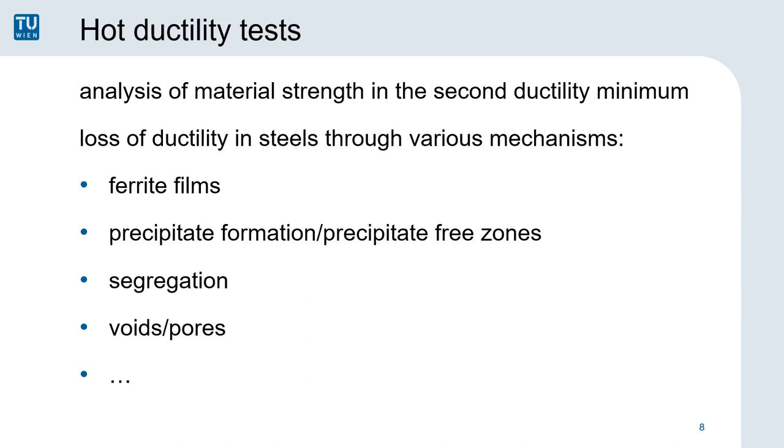This brings us directly to the topic of the second ductility minimum and how we measure it. Many metals, except for very pure materials, show decreased deformability before failure above half the melting point measured in Kelvin. In steel, there has been a lot of research which identified several mechanisms responsible for this phenomenon. When ferrite forms between the austenite grains in very thin films, it tends to absorb all of the deformation and thus fail prematurely. As you can see in the pictures, the austenite grains almost fall apart, but when you look closely, you can see very fine micro ductile deformation.